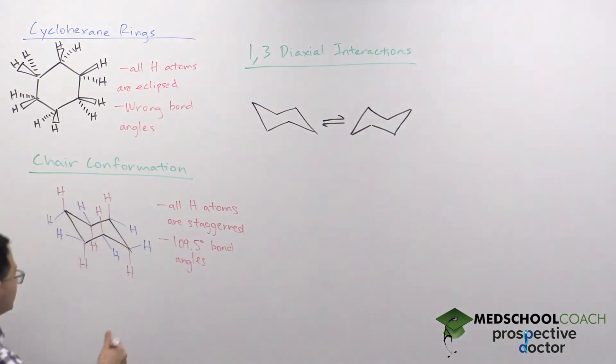I'm going to make a note here that in red we have axial hydrogens, and in blue we have equatorial hydrogens.